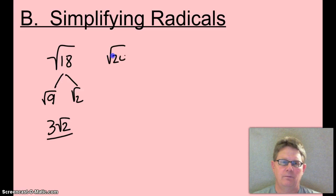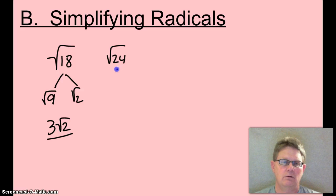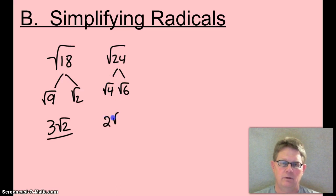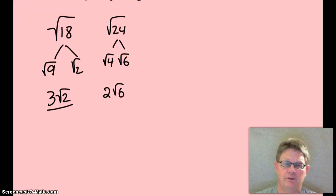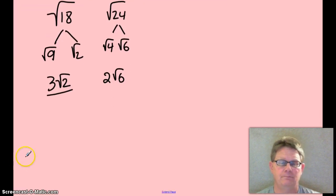Let's do another one. Root 24 — what's the biggest perfect square that goes into 24? Yes, it is 4. And the square root of 4 is 2. So 2 root 6. Root 6 can be broken up into root 3 and root 2, but those are both prime numbers so they can't be broken up any further. We'll just leave it as the product root 6.